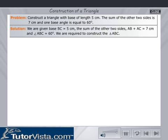We are given base BC equals 5 cm, the sum of the other two sides AB plus AC equals 7 cm, and angle ABC equals 60 degrees. We are required to construct triangle ABC.